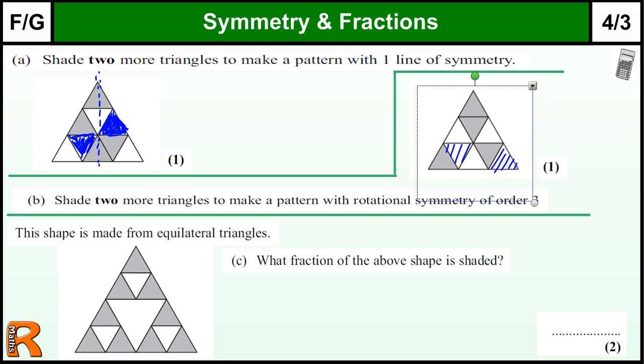Now part C is a fraction question. What fraction of the above shape is shaded? Be careful that we don't miscount. If we draw in the triangles so we know exactly, all triangles are the same. How many shaded? One, two, three, four, five, six, seven, eight, nine out of... well, we have those nine plus this one, ten, eleven, twelve, thirteen, fourteen, fifteen, sixteen. So nine out of sixteen shaded.